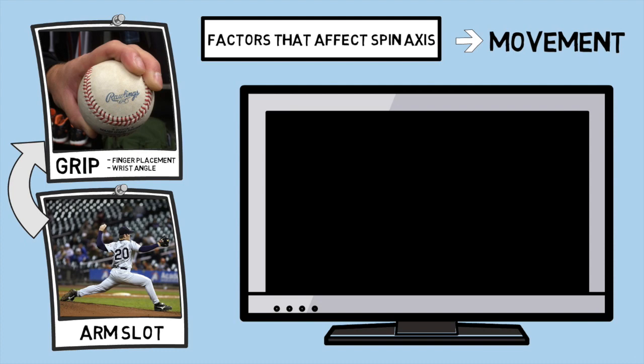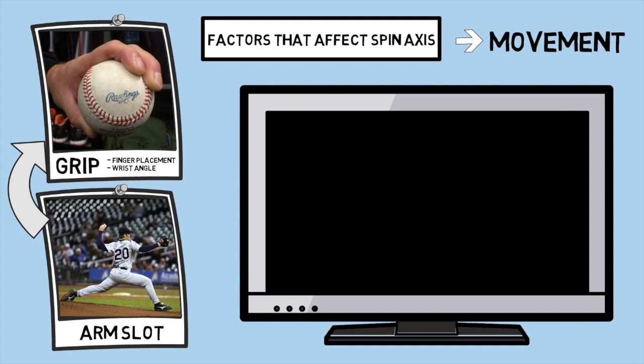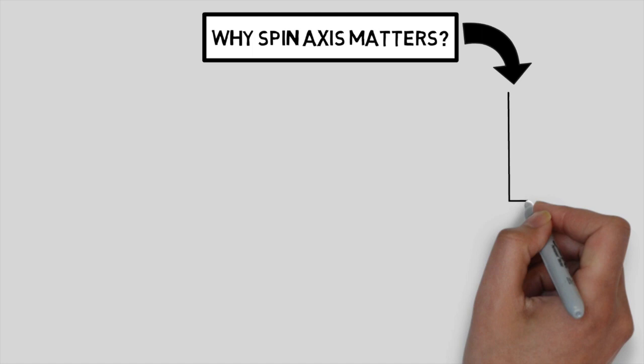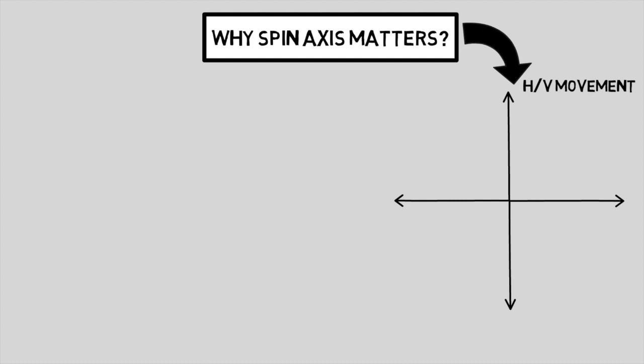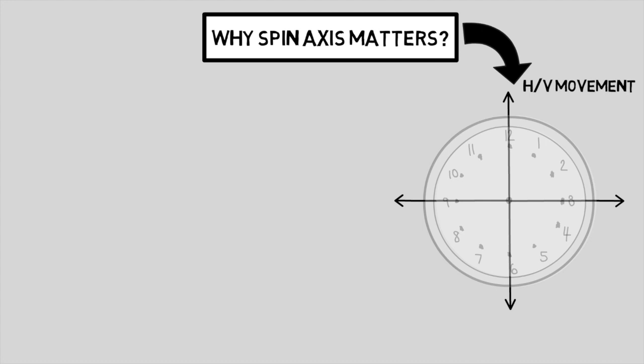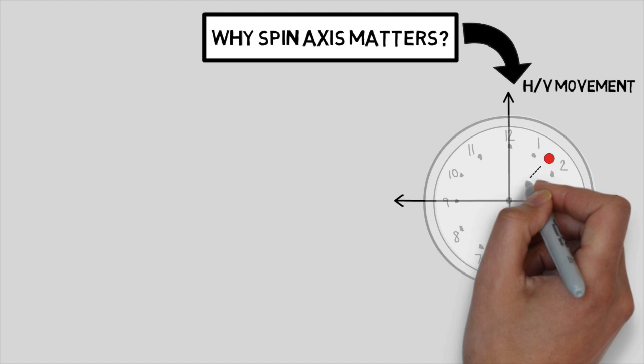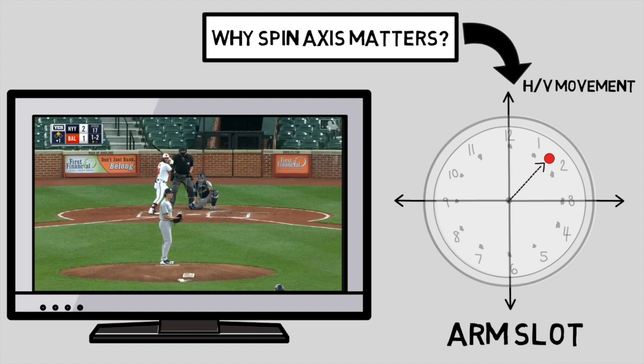Spin axis is important because it has a direct effect on every single pitch's movement. Circling back to our question on why spin axis matters, it's because each pitcher has the ability to control the way that their pitches move. Here is a horizontal and vertical break movement chart. It basically tells us the amount of spin-induced movement each pitch has and in what direction, by taking gravity out of the equation. If we impose our clock back onto this chart and take a look at a fastball, you can see that when a pitch's vertical and horizontal movement ends up right here, it's going to record a spin axis right about at the 130 mark. This is how our arm slot comes into play.